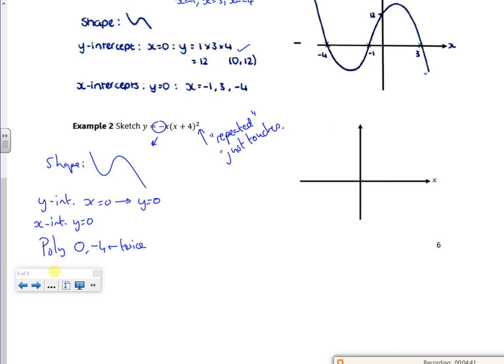That -4 twice tells me it touches. So I've got an upside down graph that just touches the x-axis at -4, but it also goes through the origin. It's not the best picture, but that's the idea - it just touches at -4, goes through the origin, and is upside down.